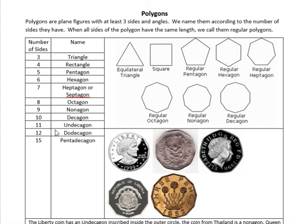An undecagon has eleven sides, a dodecagon has twelve, and then pentadecagon — penta is your five prefix, deca is your ten — so pentadecagon would be fifteen. So we can name shapes like that.